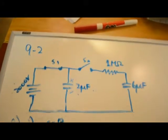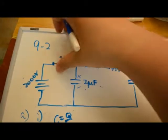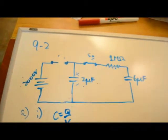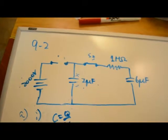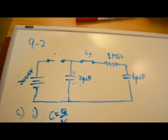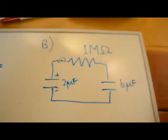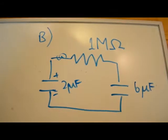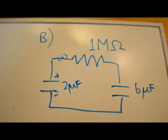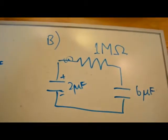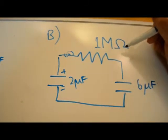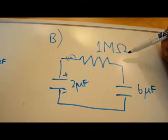In part B, S1 opens while S2 closes. The circuit is no longer hooked to the power supply. Here is a simplified drawing of the new circuit without the power supply. Part B asks to find the initial current in the resistor the instant S2 is closed.